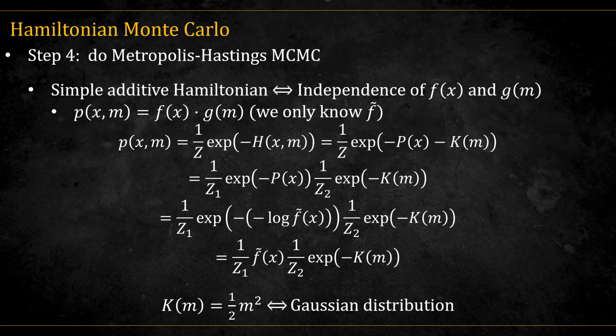Let's see how this plays out. Because we chose a simple additive Hamiltonian, the target distribution and the momentum distribution are independent. If we define the joint probability in terms of the Hamiltonian and expand it, we get this expression. We recognize the first term as the normalized target distribution. The second term defines the distribution of M. With our choice of kinetic energy, this corresponds to a Gaussian distribution. And the relationship works in both directions. More advanced versions of the algorithm can use different momentum distributions, but we won't go into those in this video.